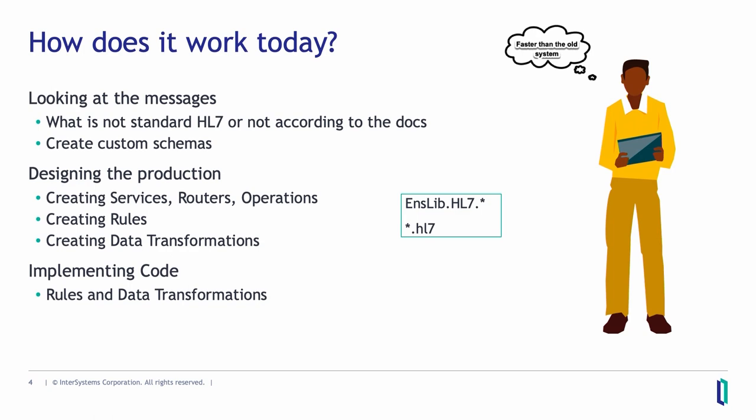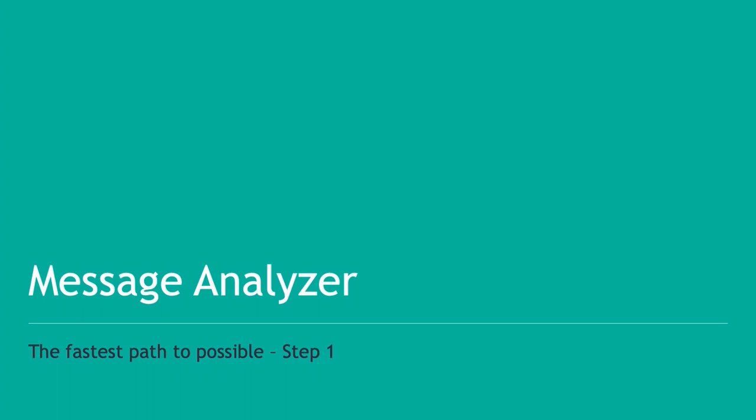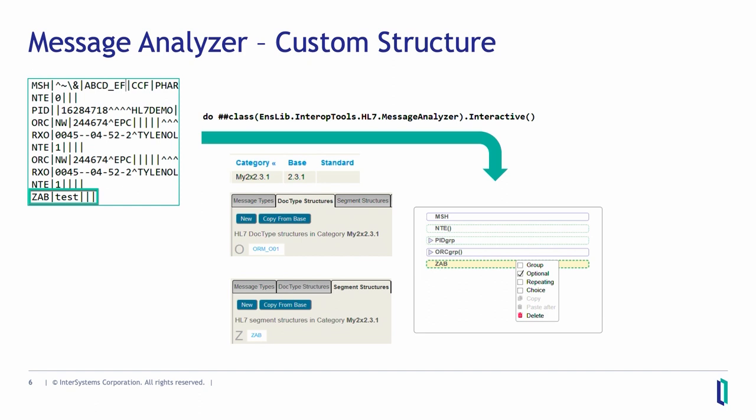The message analyzer will do that job for you. It looks at your messages, finds out whether they are according to the standard definitions, and if they are not, it will fix that problem for you. For example, there can be additional segments that are not supposed to be in the message. With an example message that has an additional segment at the end, you call the message analyzer and it will create a custom schema for you automatically — asking for the schema name and creating a new structure.